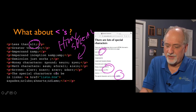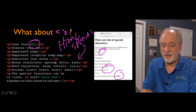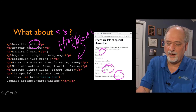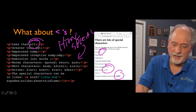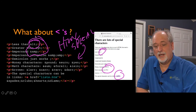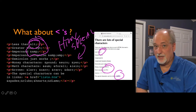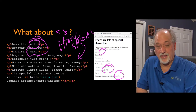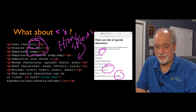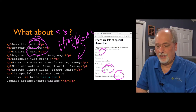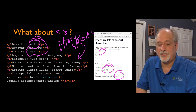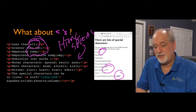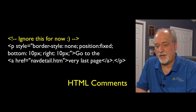The key ones you really need to know about are less-than, greater-than, and ampersand — because ampersand itself becomes a special character, those three are really the special characters in HTML. To represent less-than, you use ampersand-LT-semicolon; for greater-than, ampersand-GT-semicolon; and for ampersand itself, ampersand-AMP-semicolon.